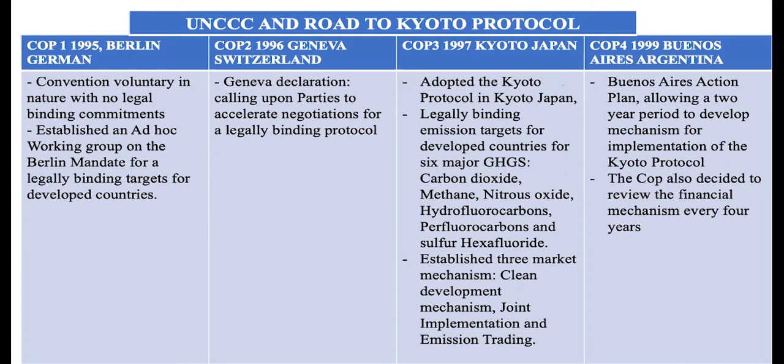The conference decided to establish an ad hoc working group called the Berlin Mandate. There was a mandate in Berlin that there is a need to develop legally binding targets for developed countries. This process was deliberated during the second COP in 1996 in Geneva, Switzerland, where there was the Geneva Declaration, which called upon parties to accelerate negotiations for a legally binding protocol.